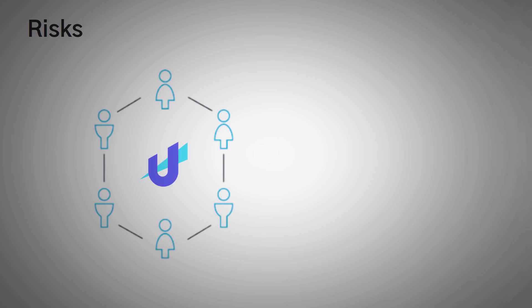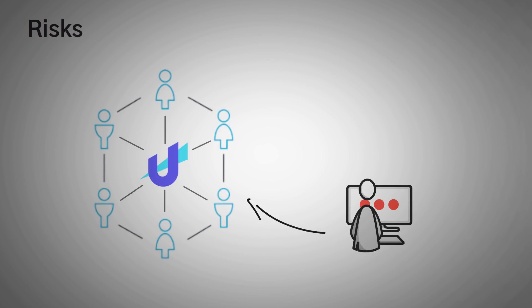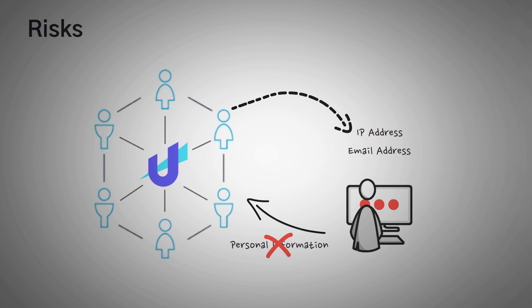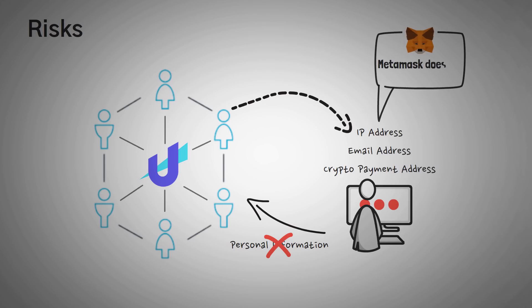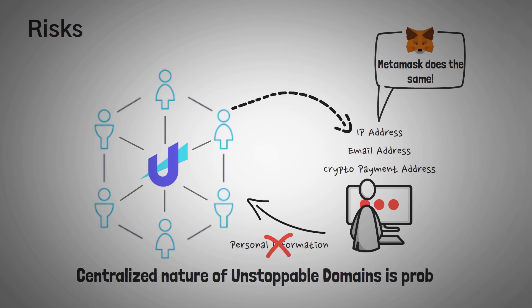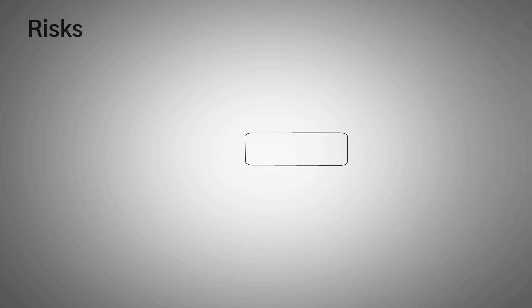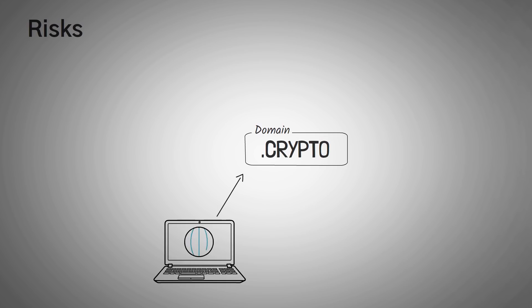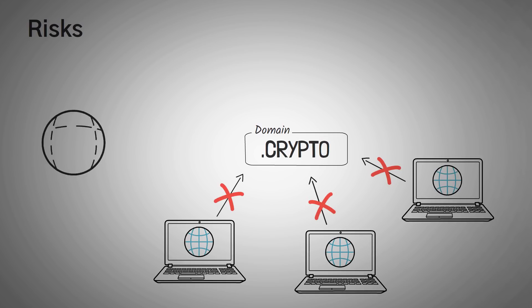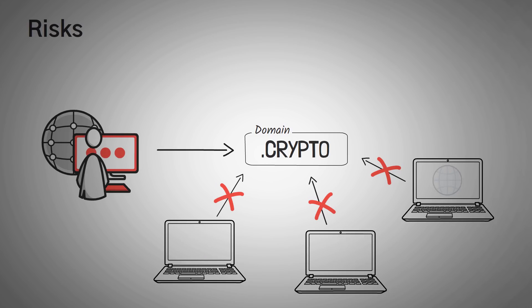Now it's time to talk about risks, because there is one bad thing I see about Unstoppable Domains, and that is that they are, in a form, centralized. Even though you don't have to enter personal information like a real name or home address, if you pay with crypto, they will have access to your IP address, the email you signed up with, or your crypto payment address. Also, the way that they reserve the specific domains is centralized. Currently, a domain ending with .crypto does not work on most browsers unless you use a special extension, so if you want to host a website, you'll have to ask visitors to install Brave or the Unstoppable Domains extension.